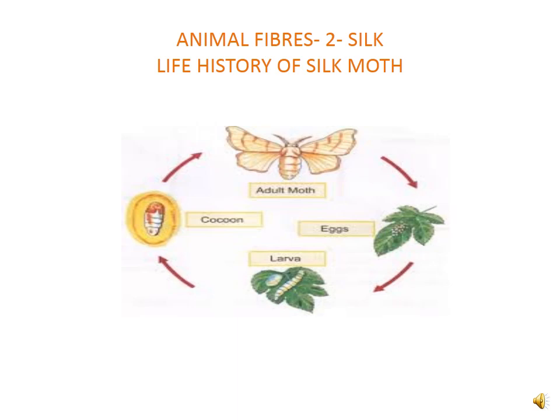The most common silk moth is the mulberry silk moth. Generally, the silk moth is nurtured on mulberry trees. The silk fiber from the cocoon of this moth is soft, lustrous, and elastic, and can be dyed in different colors. The culture of silk moths is a very old occupation in India. China leads the world in silk production. India also ranks among the leading silk-producing countries.